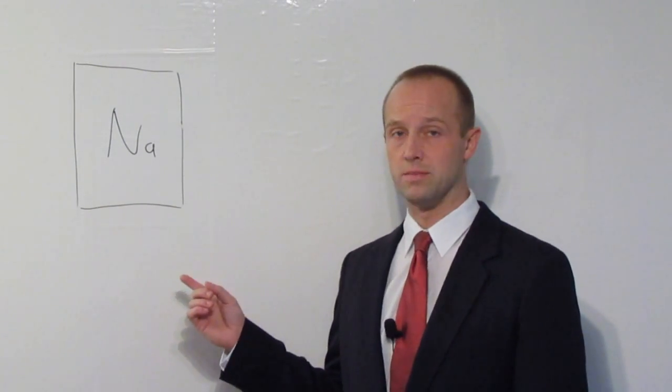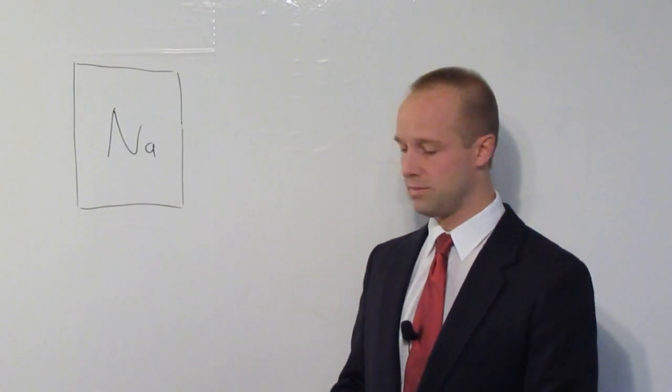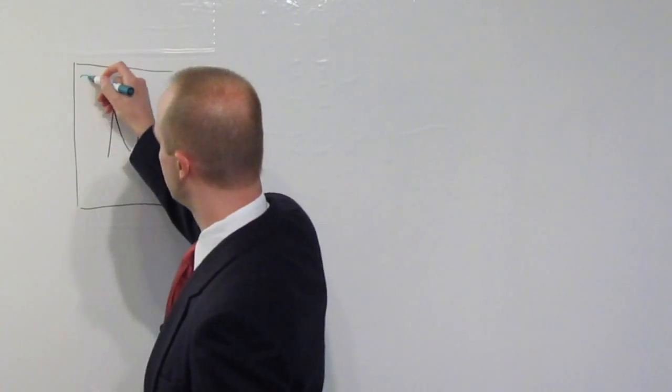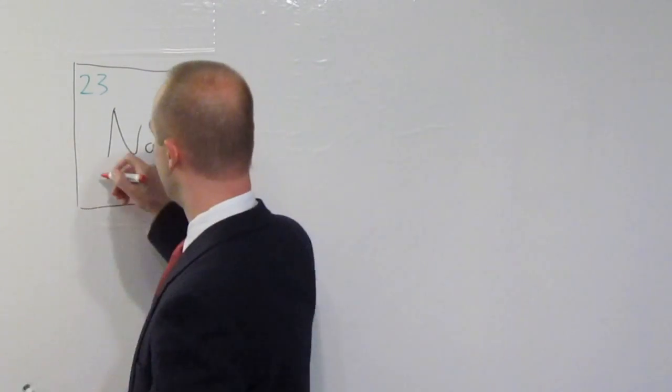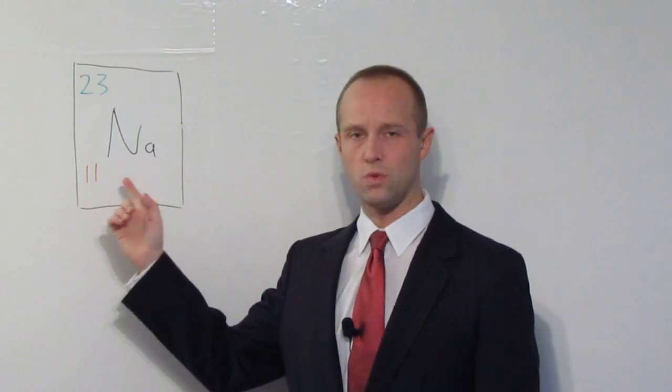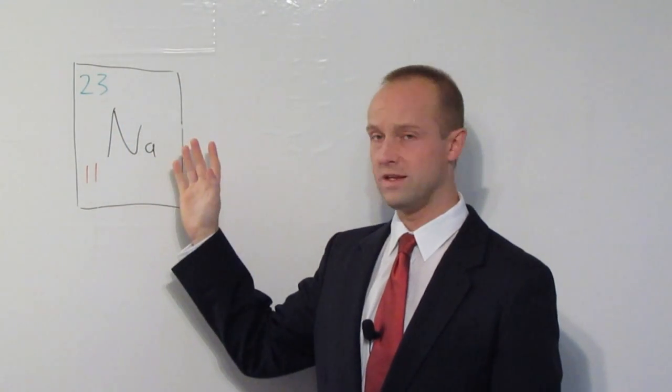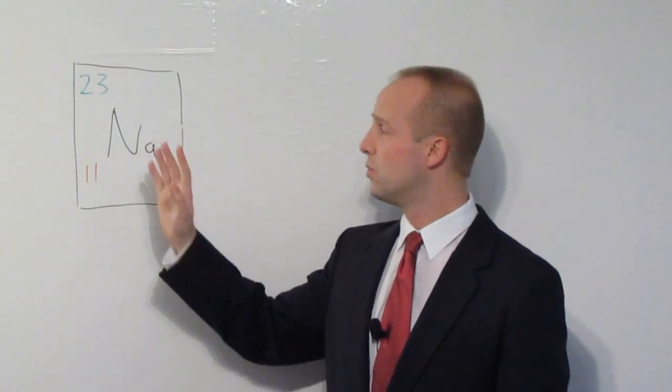I'm going to start with sodium, because that's a fairly common one that you're fairly likely to see. And there are two numbers in sodium's entry in the periodic table. The first one is 23, and the second one is 11. Now this smaller number is the one that we're really interested in for electron diagrams. The other one is going to come up in your GCSE science, but for now we're going to ignore that.